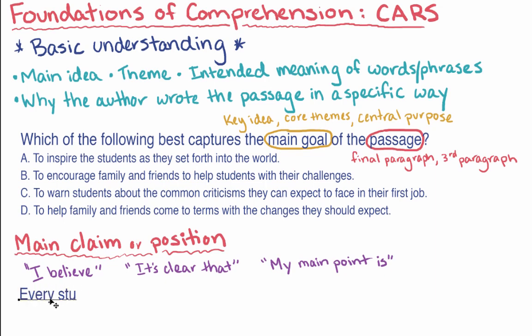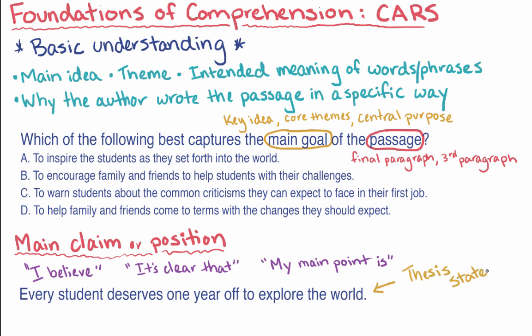For example, take a look at this statement. Every student deserves one year off to explore the world. This statement is important because it tells you what the author believes. It serves as the author's thesis statement and foreshadows what they are going to argue. By saying deserves, the author is suggesting that every student who wants to take a year off to explore the world should be able to do so.